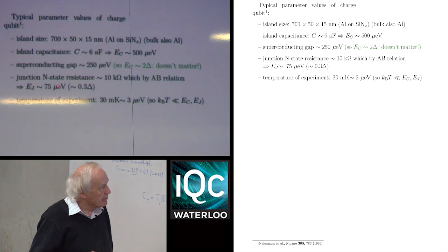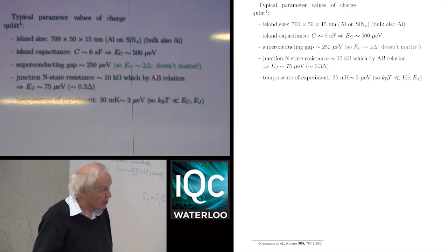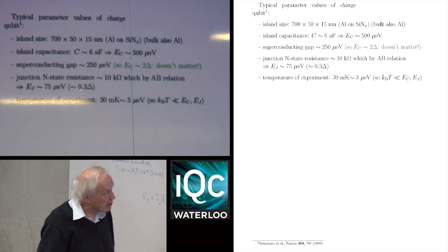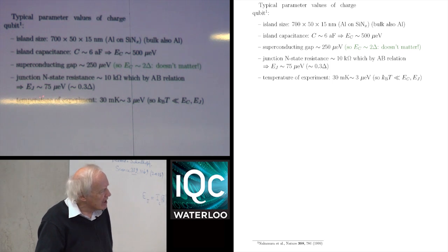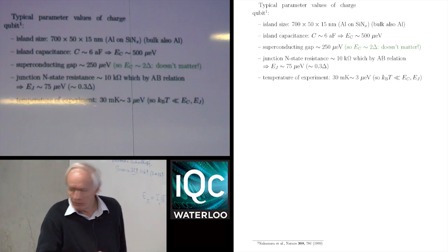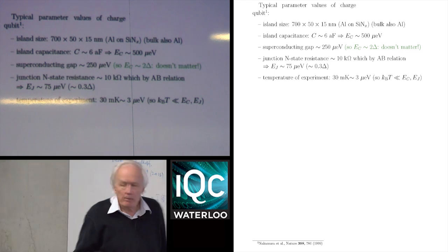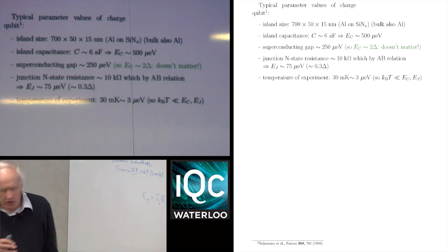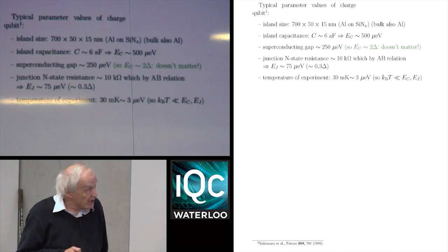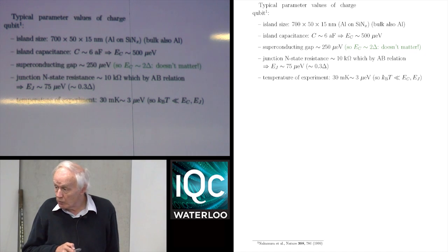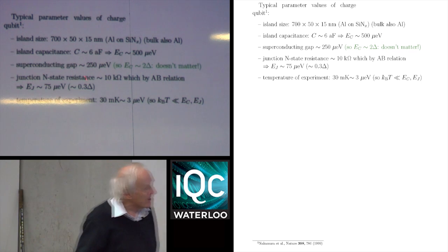The normal state junction resistance is about 10 kilo-ohms. If you assume the standard Ambegaokar-Baratoff relation applies, that gives you a Josephson energy of about 75 microvolts, which is sufficiently small compared to E_C. The temperature of the experiment is something like 30 milli-K, which is about 3 microvolts, and that is especially small compared to those two energy scales.